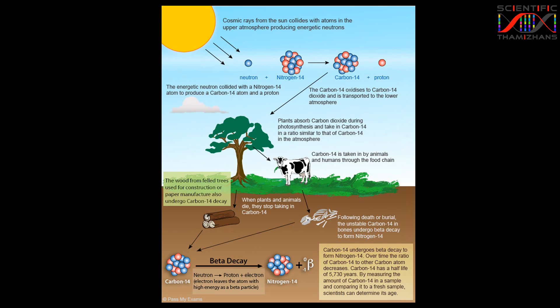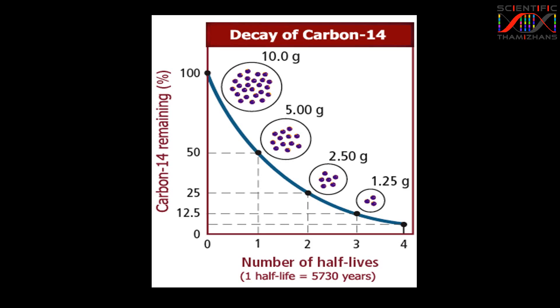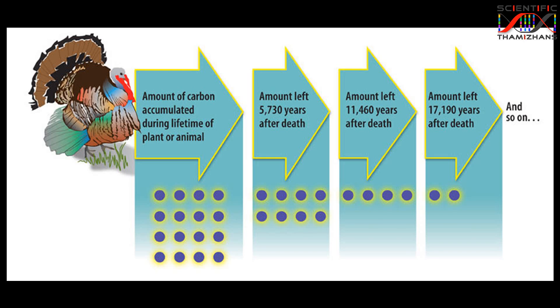Because of metabolism, carbon-14 accumulates in living organisms through this cycle. When an organism dies, it stops taking in carbon-14. This process is called beta decay. The carbon-14 then decays back into nitrogen-14, and this is why we look at half-life.